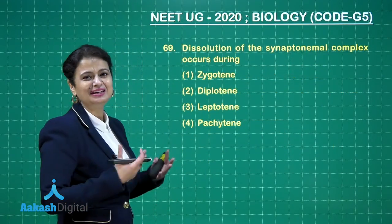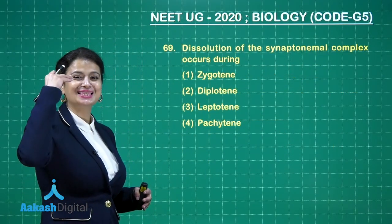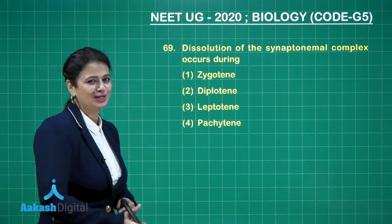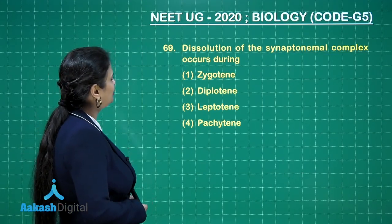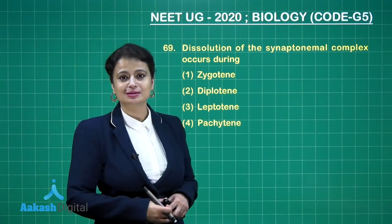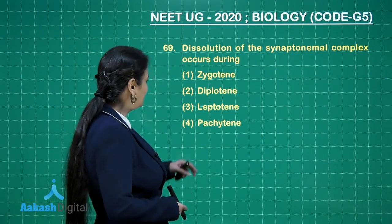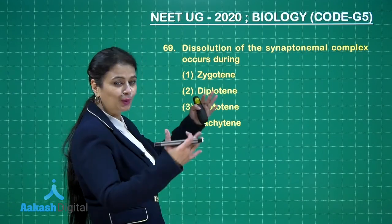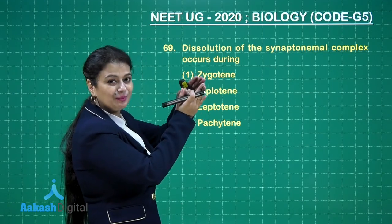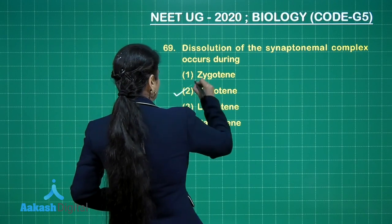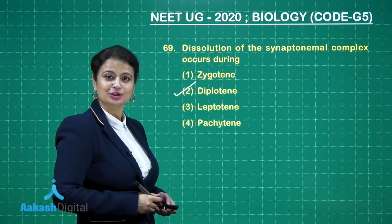Another question from meiosis: when does the synaptonemal complex dissolve? The synaptonemal complex dissolves during the diplotene stage, due to which homologous chromosomes start repelling each other. This is our answer.